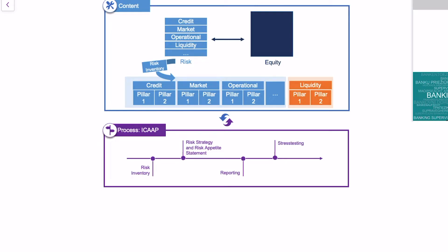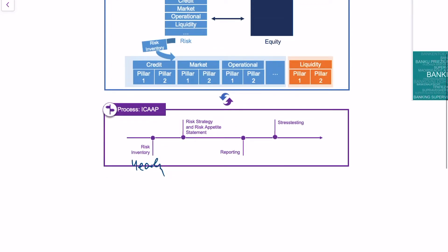ICAP is the process of risk management in a bank, and it has a lot of pillars — a lot of things that need to be done on a regular basis. The first one is the risk inventory: we need to understand which risks are relevant to my bank, and I've done a separate video on risk inventory. The risk inventory is done once a year, so it's a yearly process. I also need to do a risk strategy and a risk appetite statement, which is also a yearly process, and I will do a separate video on this.